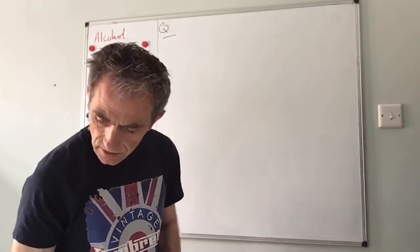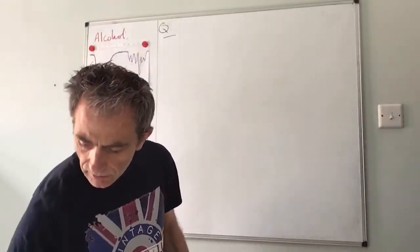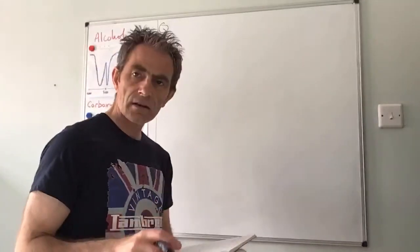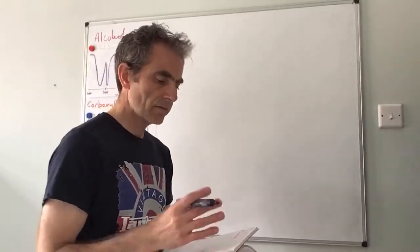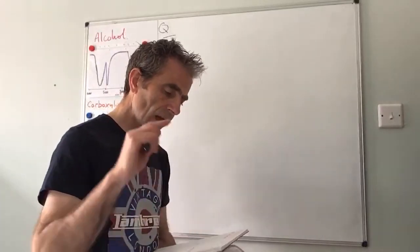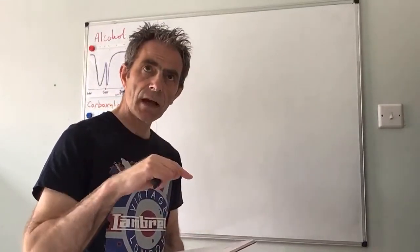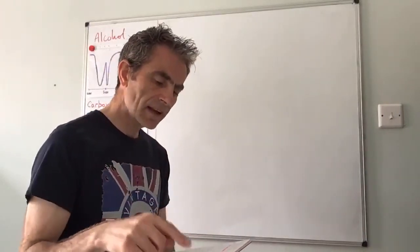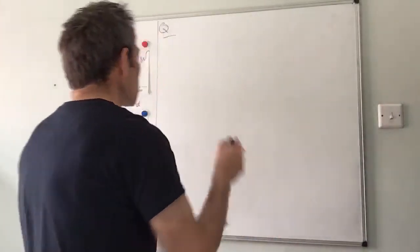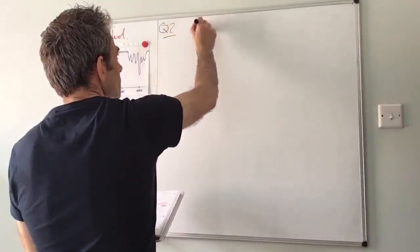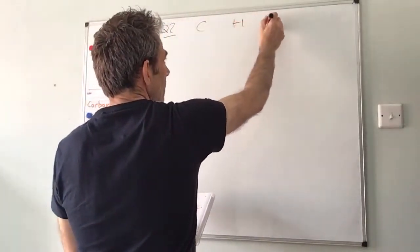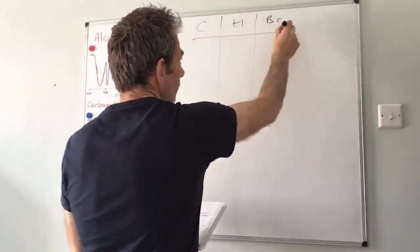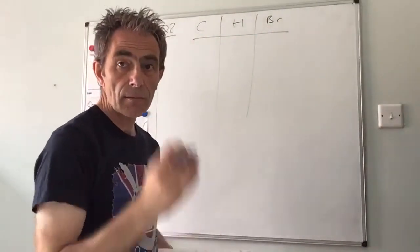Right, we're going to rub this out, we'll go on to question two. Question two A, we're given some percentage composition values for a compound that contains carbon hydrogen and bromine, so it's obviously a haloalkane, and we were told that the MR of the isomers was less than 150.